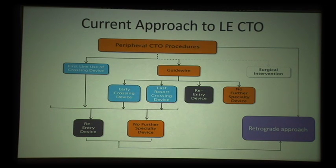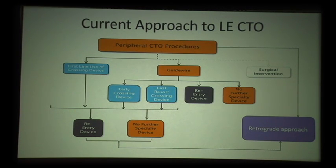This is our very simplified published scheme: think first about a crossing device based upon presence or absence of a tapered tip. If the angiographic appearance is not straightforward, you could start with a guide wire and then use a re-entry device to bail out. Primary retrograde approaches in select hands can also provide a very high degree of success.